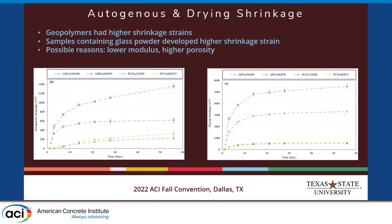Let's move to the shrinkage test. As you can see, geopolymer samples had much higher shrinkage values — the free shrinkage in terms of drying shrinkage or autogenous shrinkage — because of the high liquid ratio and also because the mixture is less stiff. So the shrinkage value will be higher.